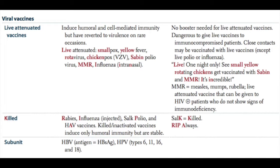The killed vaccines include the rabies vaccine, influenza, the Salk polio vaccine, and hepatitis A vaccines. You can distinguish the two polio vaccines by remembering that Salk equals killed. Another mnemonic to remember killed vaccines is 'RIP Always' — R is rabies, I is influenza, P is polio, and A is hepatitis A vaccines.